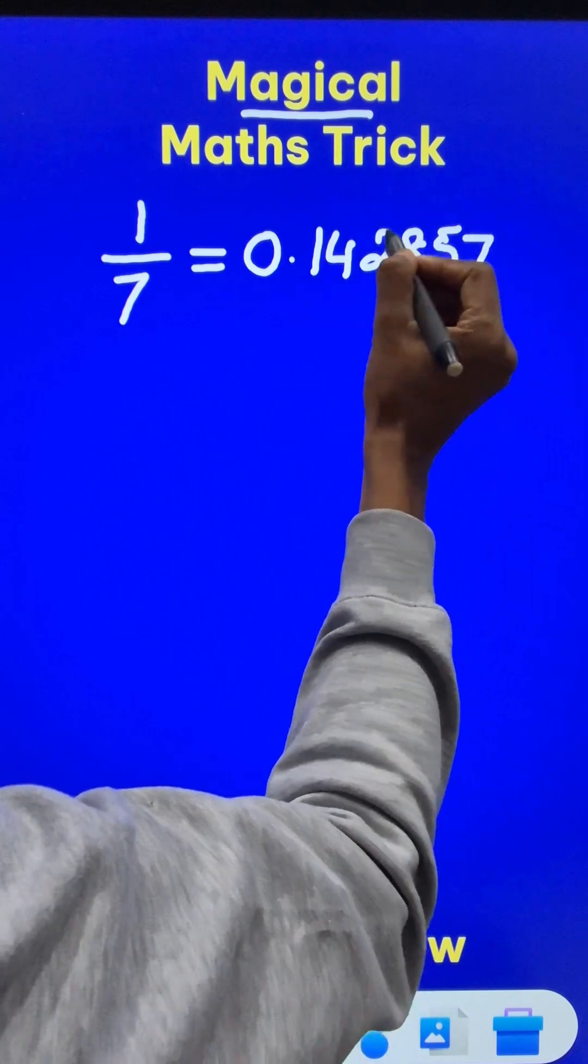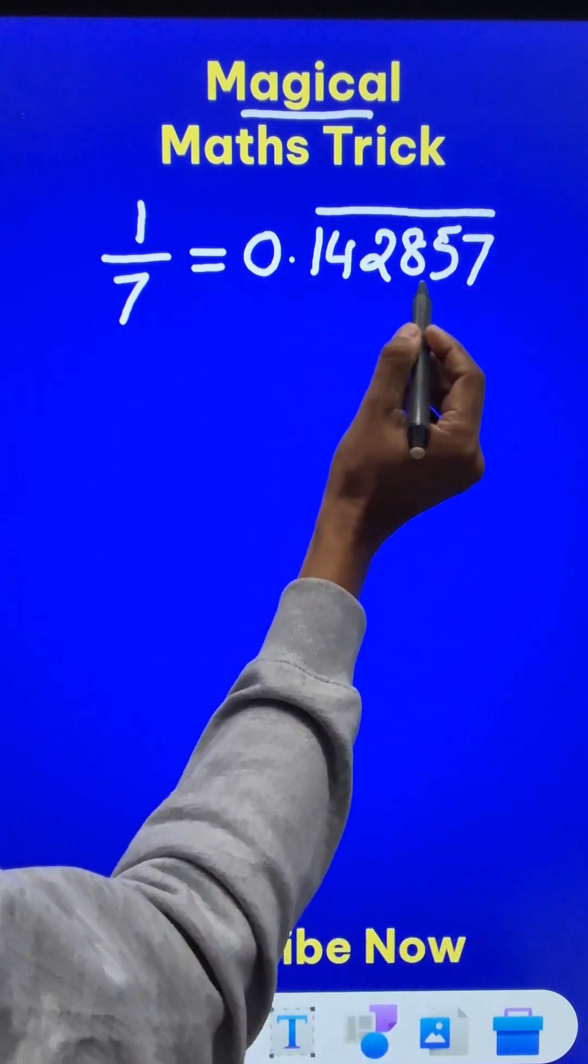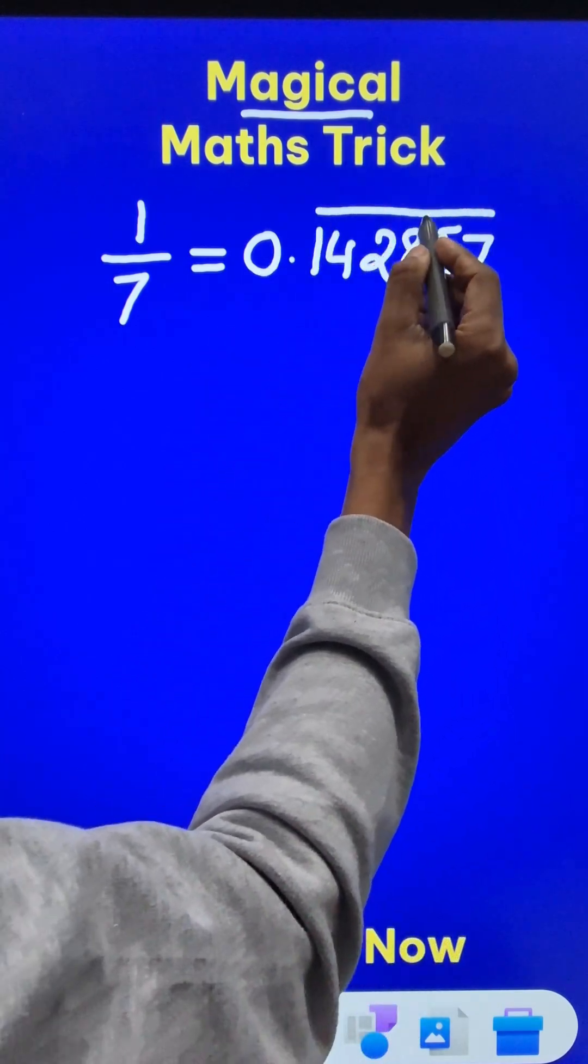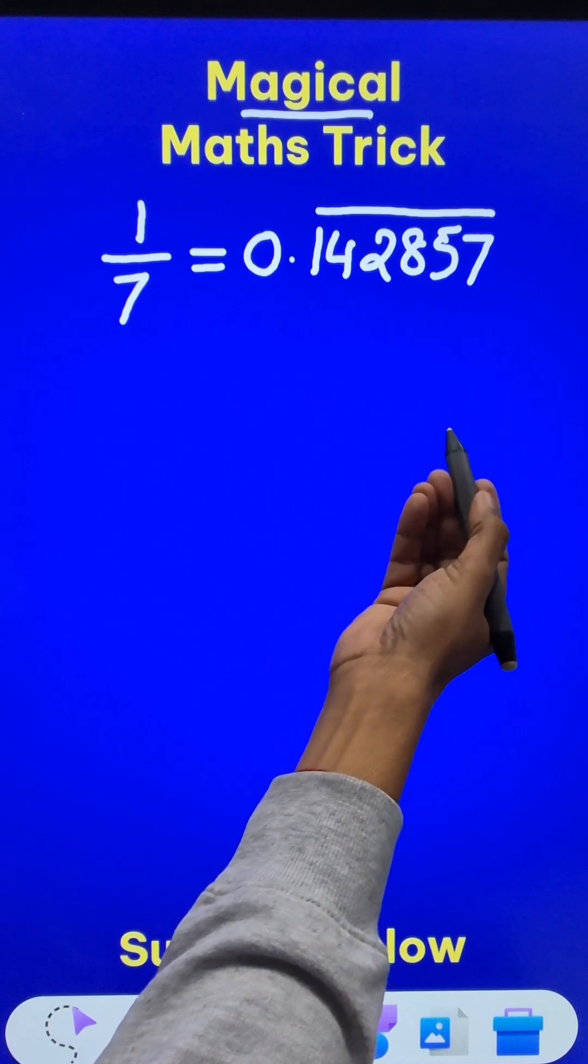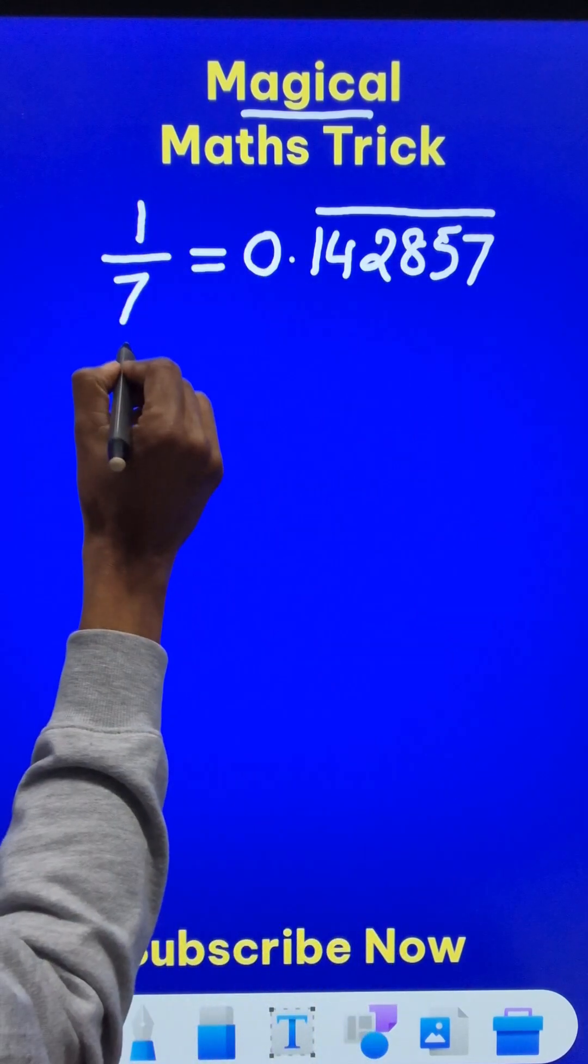1 more than that is 57. You will be surprised to note that these 6 digits, 142857, will repeat over and over again to give you the expansion of 1 by 7. Likewise,